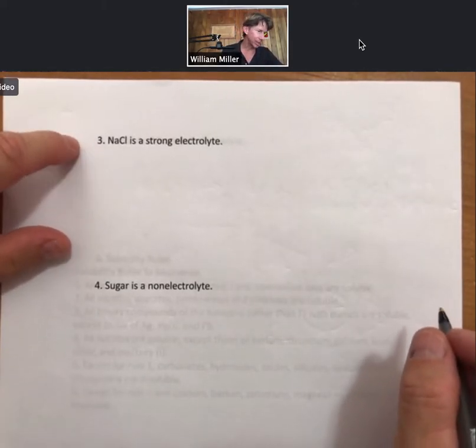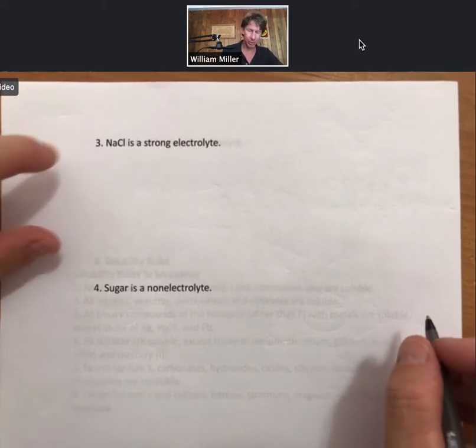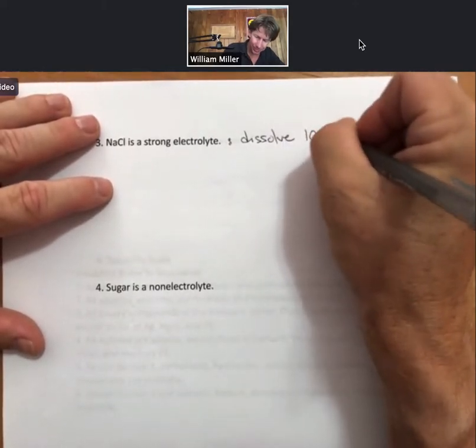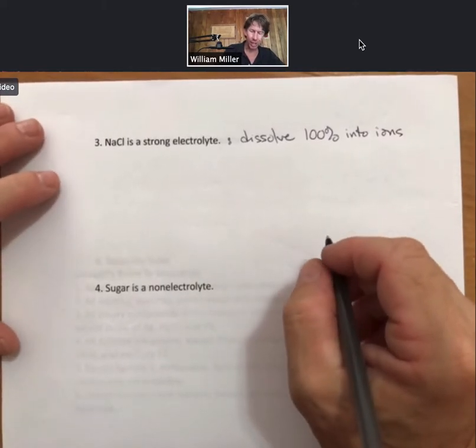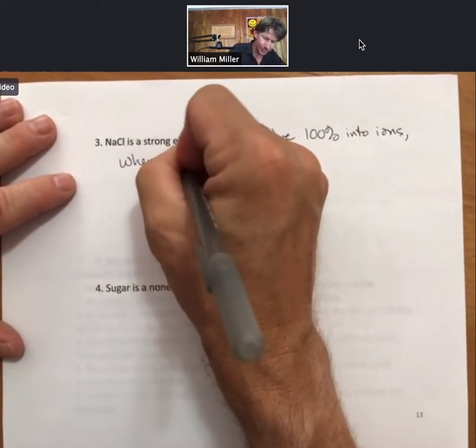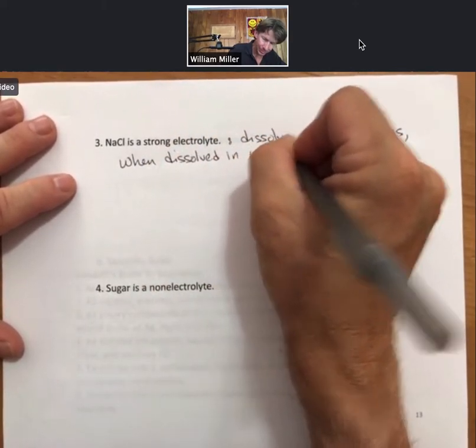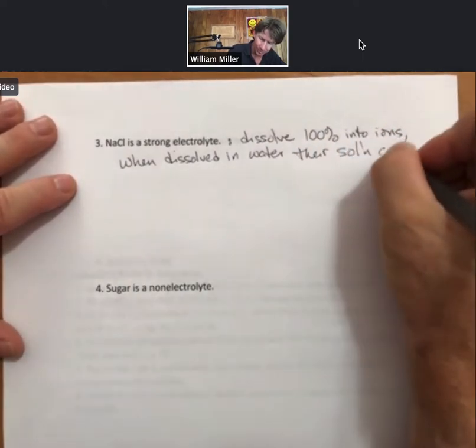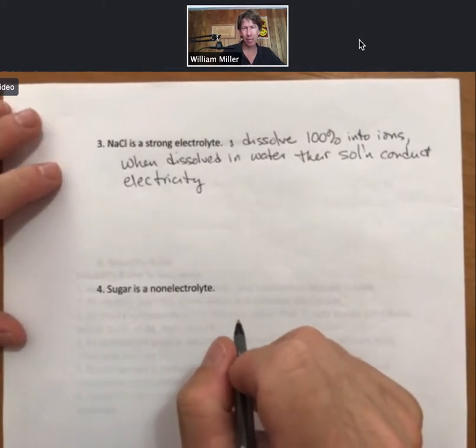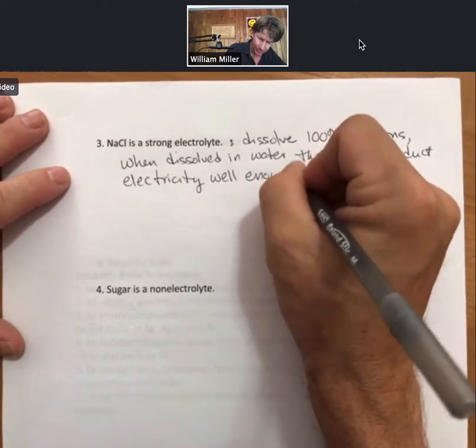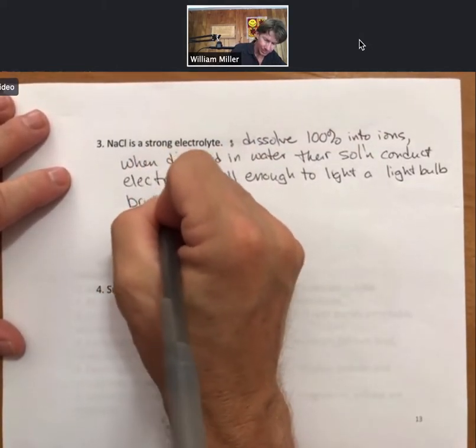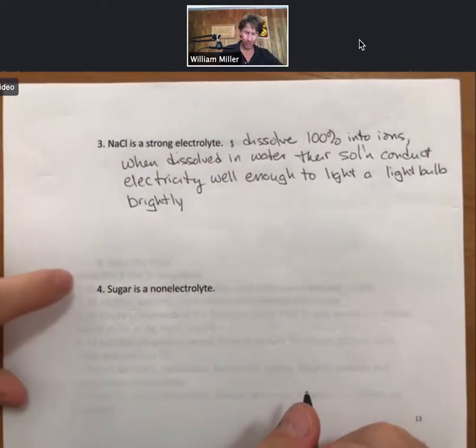Now as we said, sodium chloride is a strong electrolyte. So strong electrolytes dissolve 100% into ions when dissolved in water. Their solutions conduct electricity well enough to light a light bulb brightly.